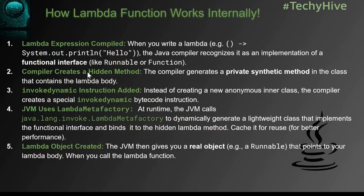Second, the compiler creates a hidden function method. Because the lambda expression is just brackets, arrow symbol, and the expression, the compiler creates a private synthetic method inside the class containing the lambda function. Then an invokedynamic instruction is added to the place where the lambda expression appears. So instead of creating a new anonymous class, the compiler creates a special invokedynamic bytecode instruction.